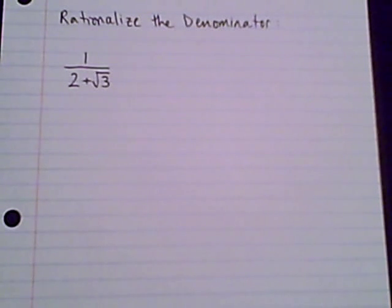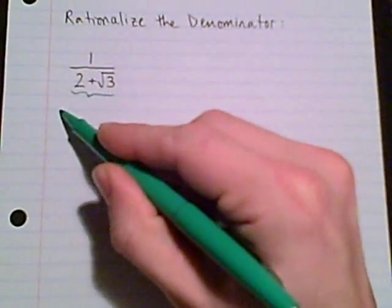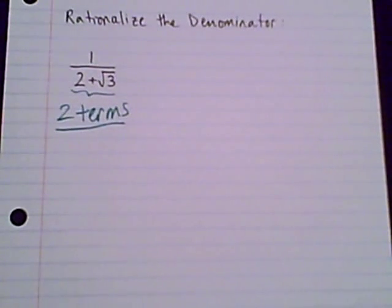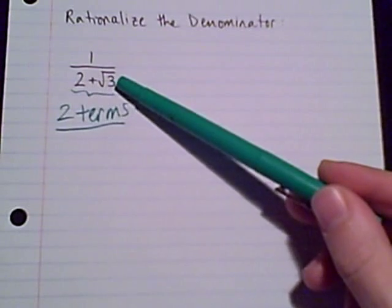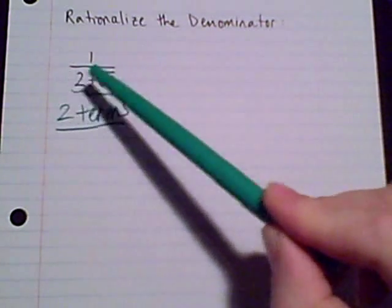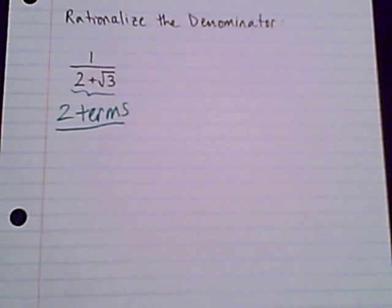Our next example for rationalizing the denominator has changed things a bit. So I want to continue with our last way, but really just to show you that our way that we've been using is not going to work on a problem like this. And here's how I know that it won't work. Looking in the denominator, we have two terms. That is what I need to spot about problems where I rationalize the denominator. So I know I need to rationalize the denominator when I see that there is a radical in the denominator. That is the problem. That is when we need to rationalize. But when I look in the denominator, I have two terms compared to our previous few examples where our denominator was just one term. So two terms is the clue that I need to use a different approach to rationalizing the denominator.